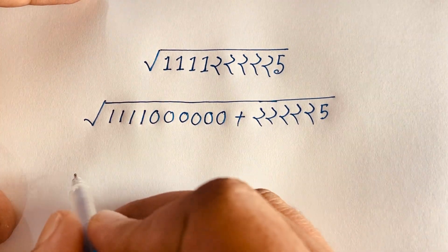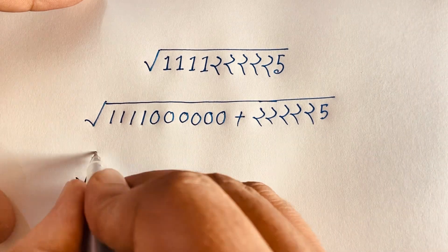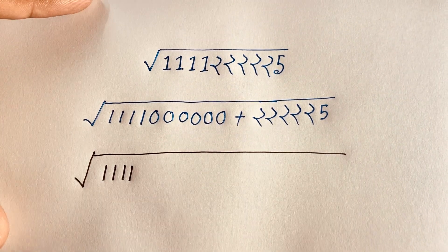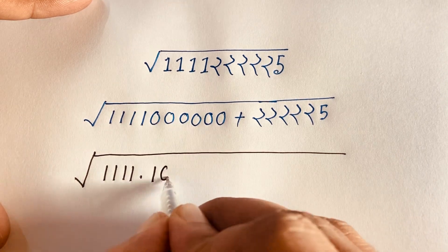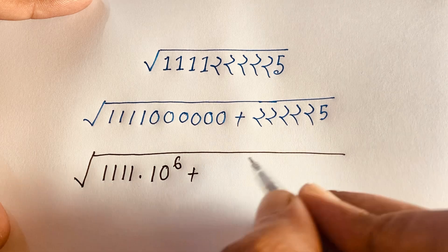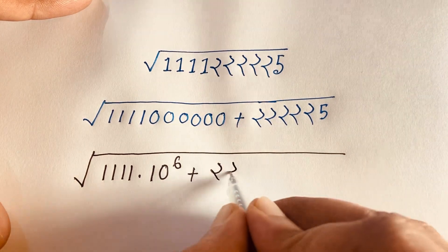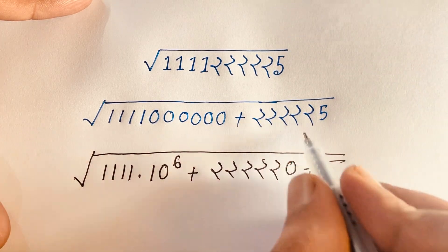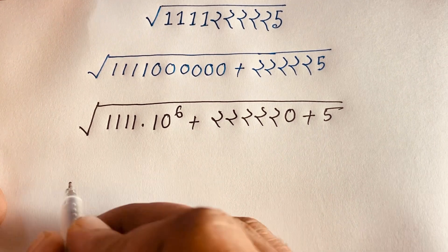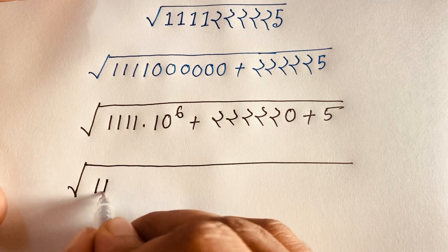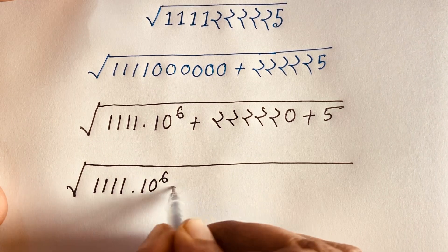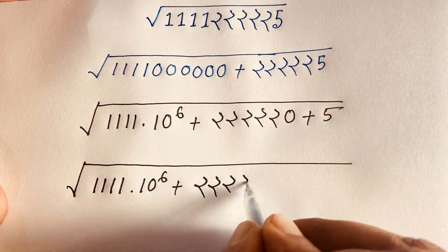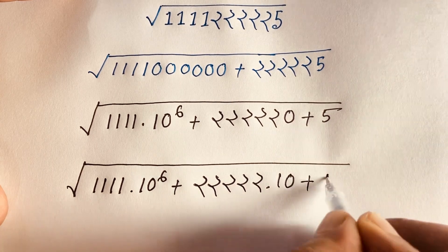Now you can see under the square root it will be: here is 1111 times 10 to the power 6, plus and here we count one, two, three, four, five — take zero plus five — so this plus this gives us the next term. Under the square root we have 1111 times 10 to the power 6 plus 22222 times 10 plus 5.